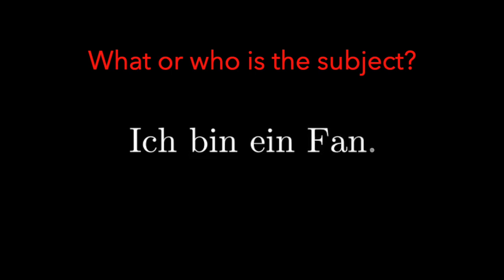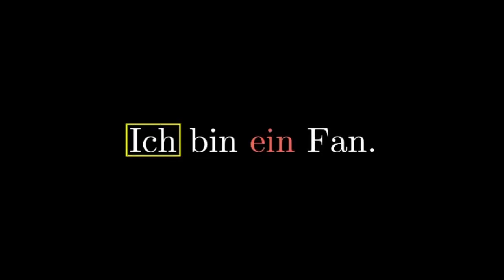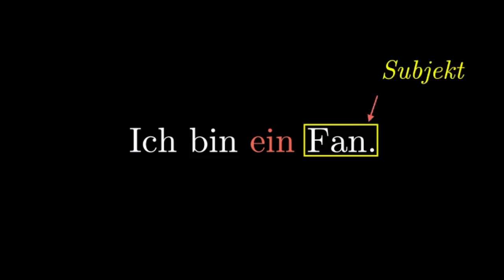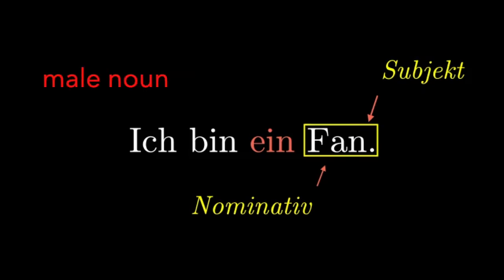To figure out what is the subject, direct object, or indirect object of a sentence, you can use the verbs as help. For example, in the beginning we had 'Ich bin ein Fan.' What is the subject of the sentence? What is the sentence all about — who or what is performing an action? Here it is clearly ich — I. And 'Ich bin ein Fan' means you're referring to yourself, the subject of the sentence. That's why Fan here is in the Nominativ case, and ein is the indefinite article for the male noun der Fan, which is in the Nominativ case.